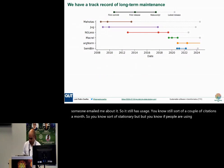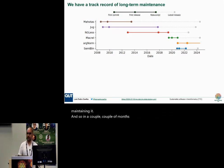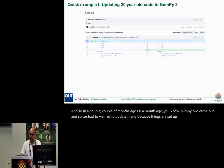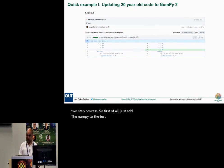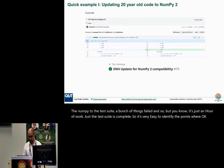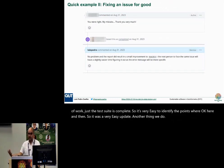People are still using it and we're still maintaining it. A couple of months ago NumPy 2 came out, so we had to update it. Because things are set up correctly, this was a two-step process: first, add NumPy 2 to the test suite — a bunch of things failed — but the test suite is complete so it was very easy to identify the failure points. It ended up being just an hour of work — a very easy update.